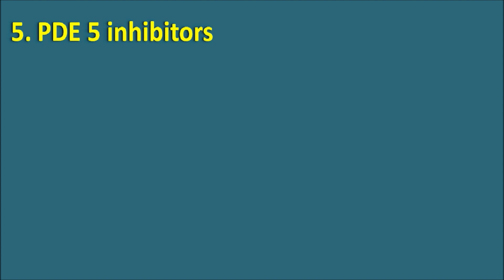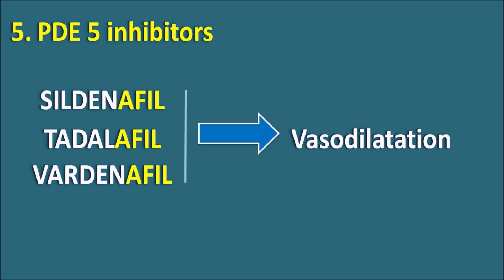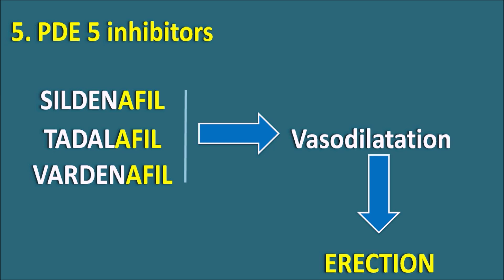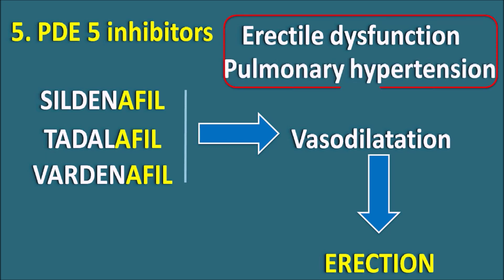The next type is phosphodiesterase type 5 inhibitors — PDE5 inhibitors. These drugs end with the suffix 'afil,' so we have drugs like sildenafil, tadalafil, and vardenafil, all having the suffix 'afil.' The suffix 'afil' indicates they are phosphodiesterase type 5 inhibitors. These drugs produce vasodilatation by inhibiting the phosphodiesterase type 5 enzyme, increasing cyclic GMP levels to produce vasodilatation, as well as relaxation of the corpus cavernosum to produce erection. Phosphodiesterase type 5 inhibitors are used in erectile dysfunction as well as in the treatment of pulmonary hypertension.